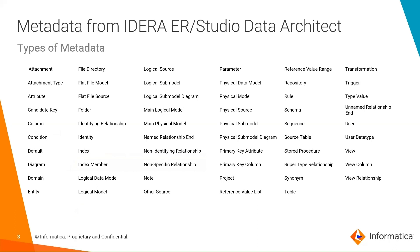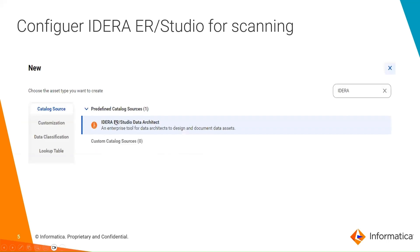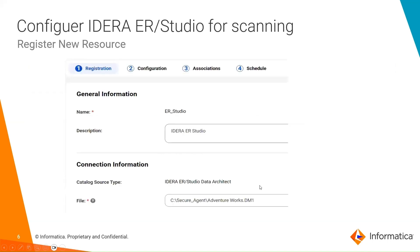To configure ER Studio for scanning, you have to log in to the IDMC portal and then Metadata Command Center. Once you log in, you can click New and create an ER Studio scanner, selecting ER Studio Data Architect from the drop-down or search. You will then be taken to the registration page to provide the required information.